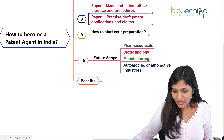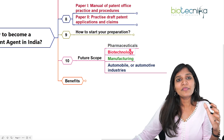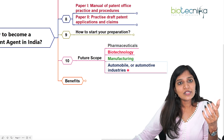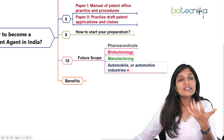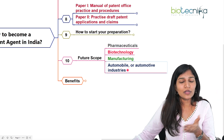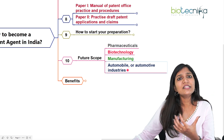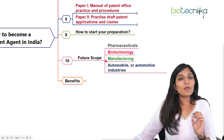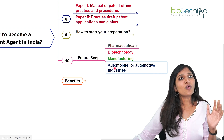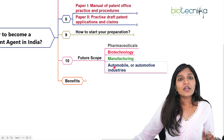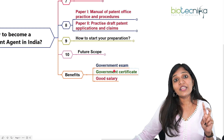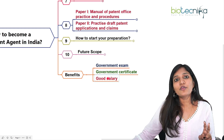If you become a patent agent, the future scope is excellent. You can enter pharma companies, biotech companies, manufacturing companies, and automobile companies — because whatever they produce, they need to patent it by filing with the Indian Patent Office. The patent agent processes the complete details: writing the patent draft and approving it. Wherever you go — IT, pharma, biotech, manufacturing, automobile, or government — all companies submit their patents only to the Government of India.